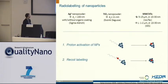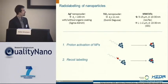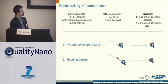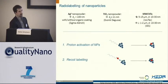What I will show you are the results of basically two methods that we tried on our particles. We use commercially available nanoparticles that we want to label for tracing experiments. We tried two methods: the first is proton activation, where a nanoparticle gets irradiated with protons and then one radioactive isotope is formed inside the nanoparticle. The second is recoil labeling, where a compound different from the nanoparticle is irradiated, undergoes a nuclear reaction, produces a recoil, and this recoil incorporates the radioisotope in the nanoparticle.